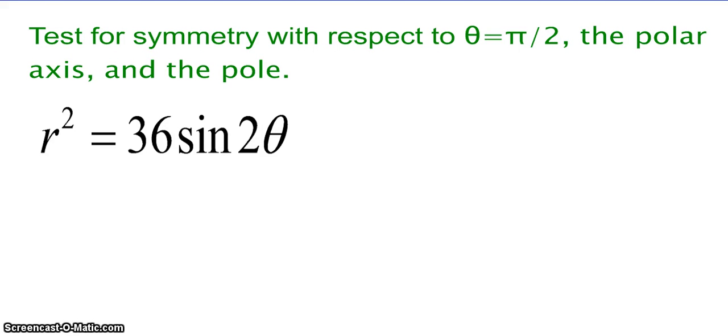Alright, so next one. Given r squared equals 36 sine of 2 theta, I want you to test for symmetry with respect to the line theta equals pi halves, the polar axis, and the pole. Pause the video. Unpause when you are ready to check your work.